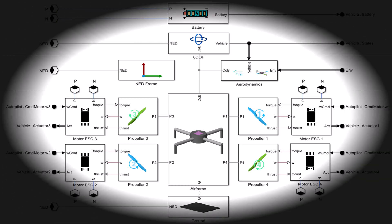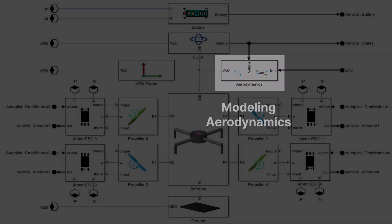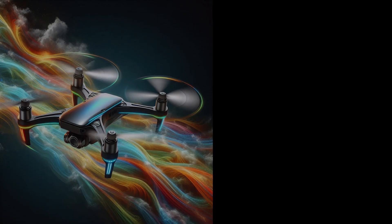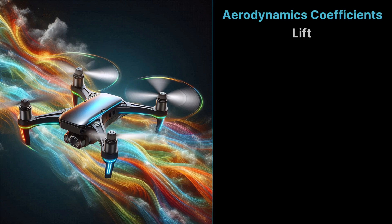In our previous lesson on modeling flight dynamics, we didn't explore the aerodynamics block in detail. In this session, now that we've incorporated wind and atmospheric models, we'll take a closer look at it. The aerodynamics of a quadcopter involve coefficients such as lift, drag, and the aerodynamic moments for roll, pitch, and yaw.